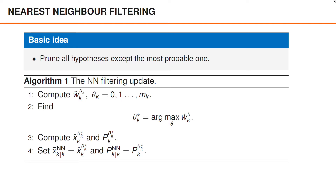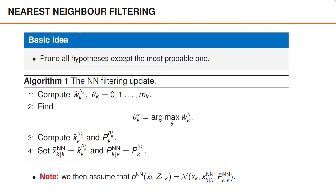Given the most probable association, we compute the posterior mean and covariance for that hypothesis and assume that these moments are the true posterior moments. It may be interesting to note that we never actually need to compute the posterior moments for any of the other hypotheses. Once we have computed the posterior moments, we assume that the posterior density is Gaussian with those moments.